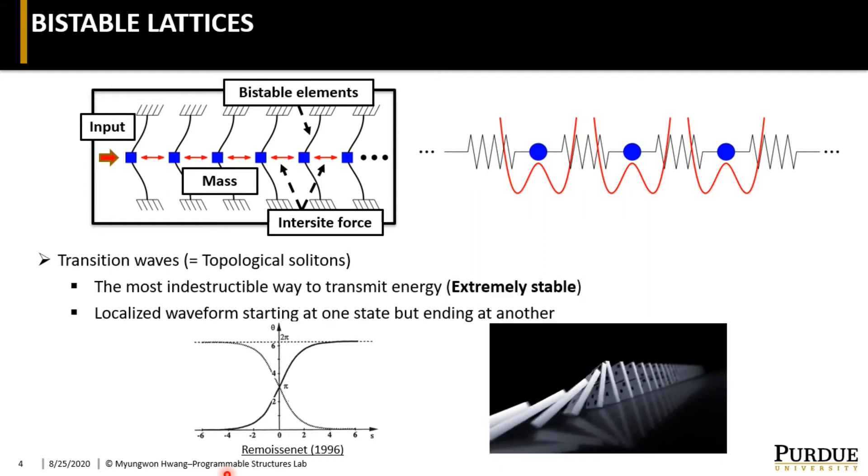This system is originally of great physical significance in that it can support transition waves. A transition wave is one of the most indestructible and stable ways to transmit energy. It has a highly localized characteristic waveform that starts at one state but ends at another state, and this is why it is also commonly called topological solitons.